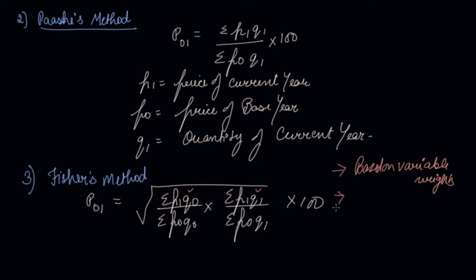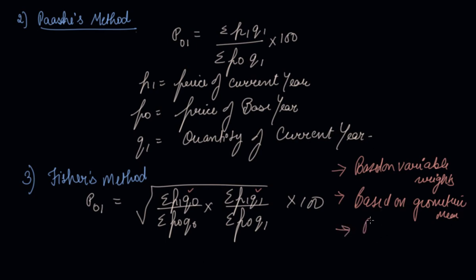Fisher's method takes into consideration the prices and quantities of both the base year and the current year. It is based on the geometric mean, which is regarded as the best mean for calculating the index number.